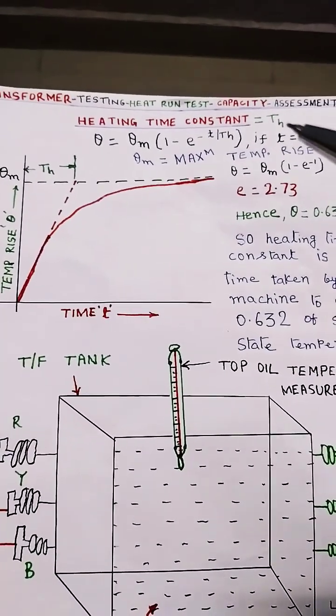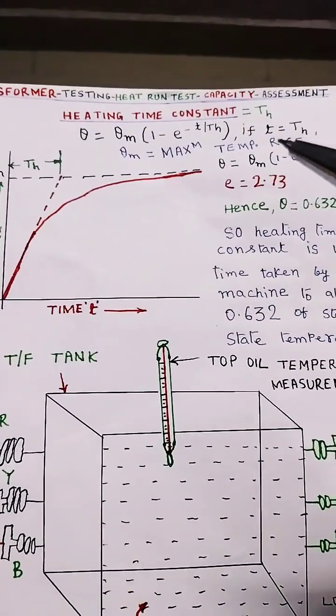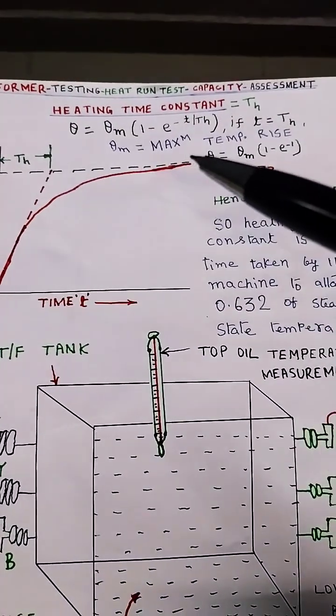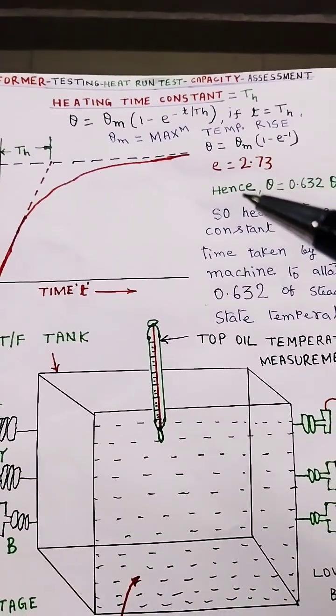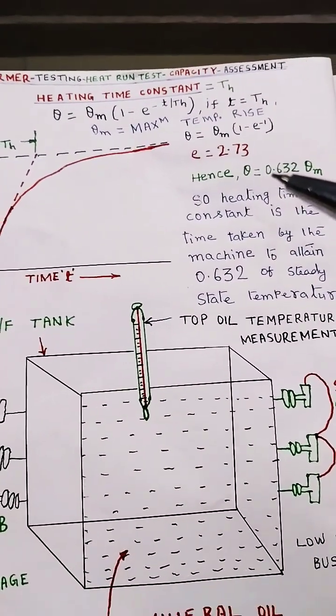If t is equal to th, th is heating time constant. If t is equal to th, theta m is equal to maximum temperature rise, theta is equal to theta m into 1 minus e to the power minus t. Hence, theta is equal to 0.632.